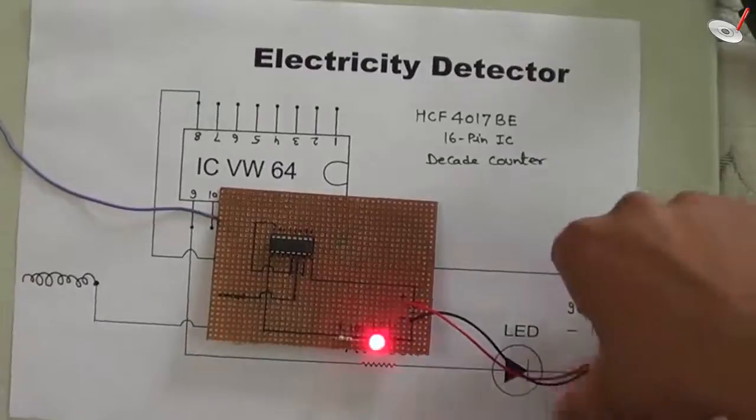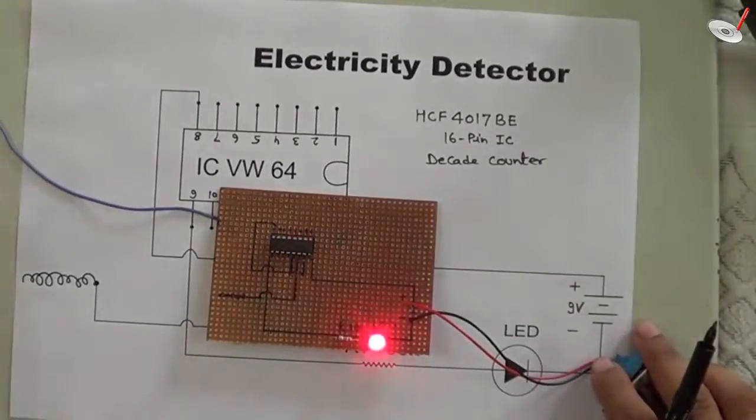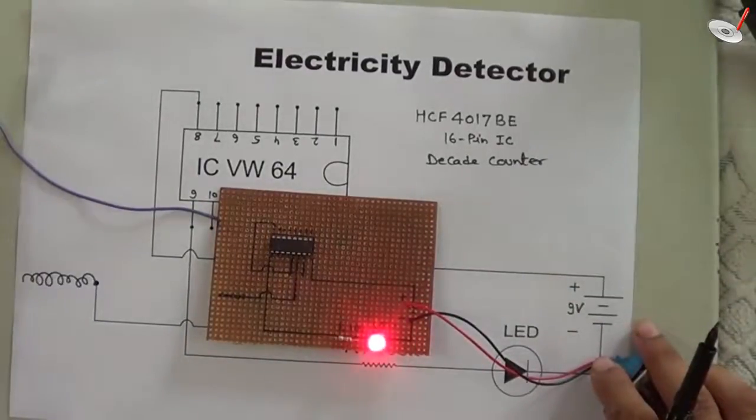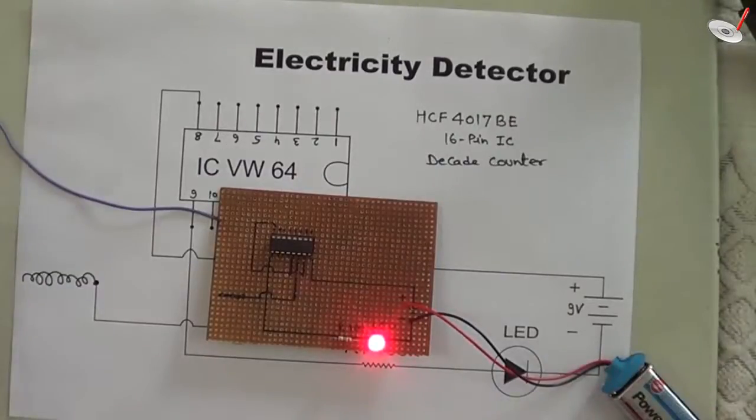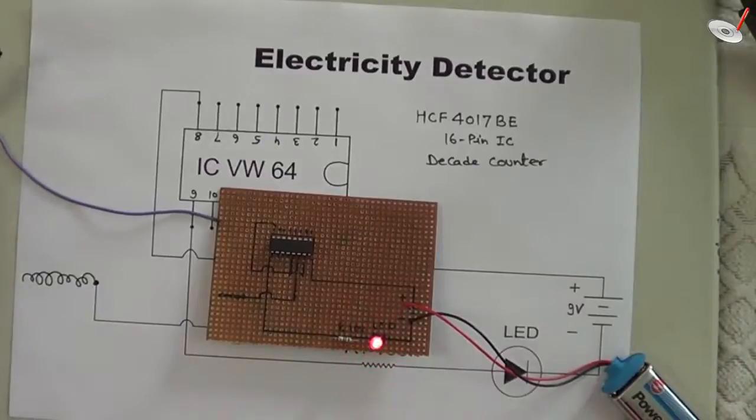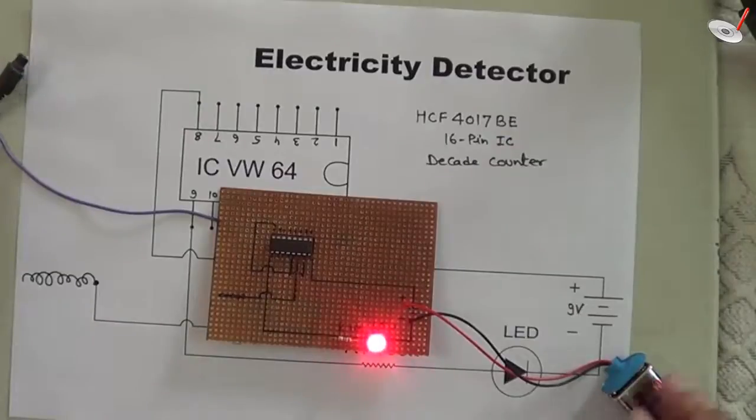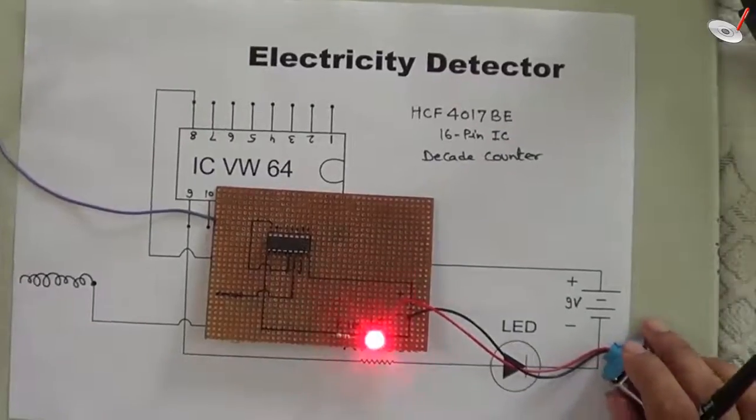here you can see we are providing this source of electricity, so the LED is starting to blink. If I remove this, then no blinking. If I bring it near, it starts blinking. So I think the working is clear for this circuit. Thank you.